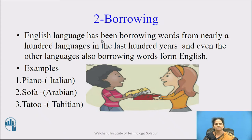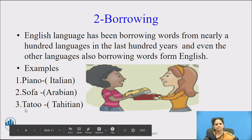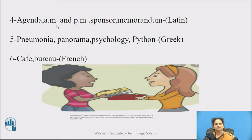The second type is borrowing. English language has been borrowing words from nearly a hundred languages in the last hundred years, and even other languages are also borrowing words from English. Examples: the word 'piano' is taken from Italian language; 'sofa' is borrowed from Arabian language; 'tattoo' is borrowed from Tahitian language; and agenda, AM and PM, sponsor, and memorandum — all these words are borrowed from Latin language.